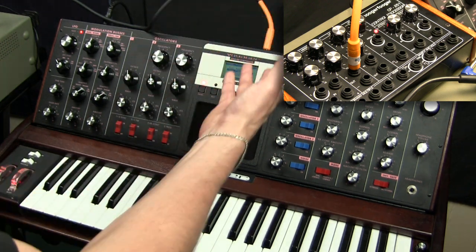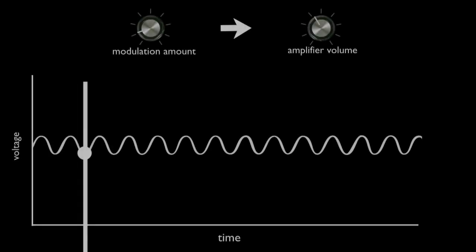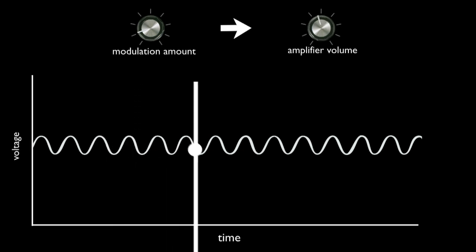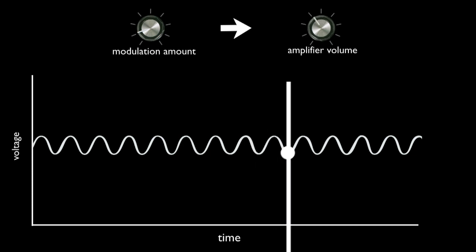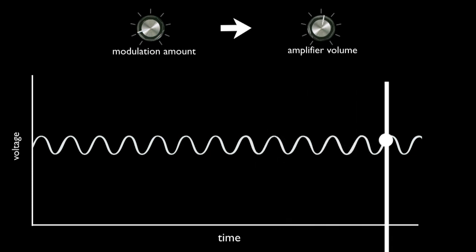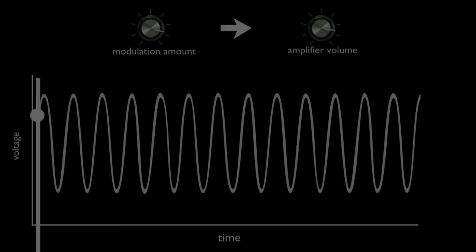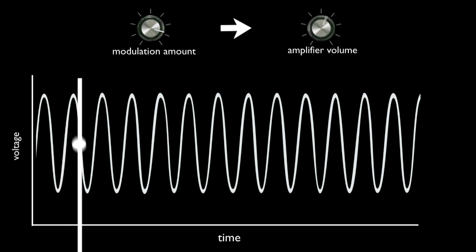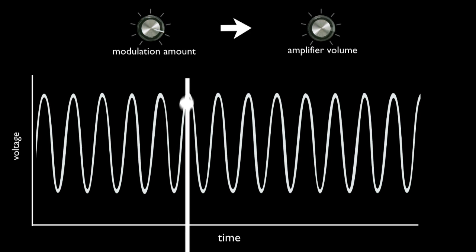Now let's take this thing and apply it to the amplifier. This is a demonstration of the amplifier volume being modulated. As you can see, the sine wave modulation is affecting the amplifier's volume slightly. Watch how the knob turns to demonstrate this. With a greater modulation, a greater variation of voltage, you can see the difference in how the amplifier knob is turning.